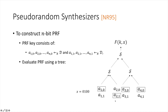We then apply the synthesizer to each pair of selected elements one by one. At each level of the tree, we compress our elements to half, and eventually we land on a single element in the domain, which is the final PRF output.